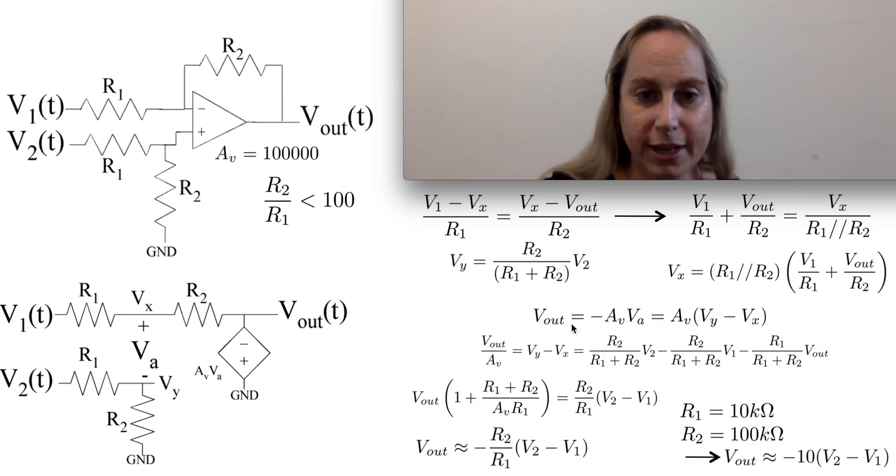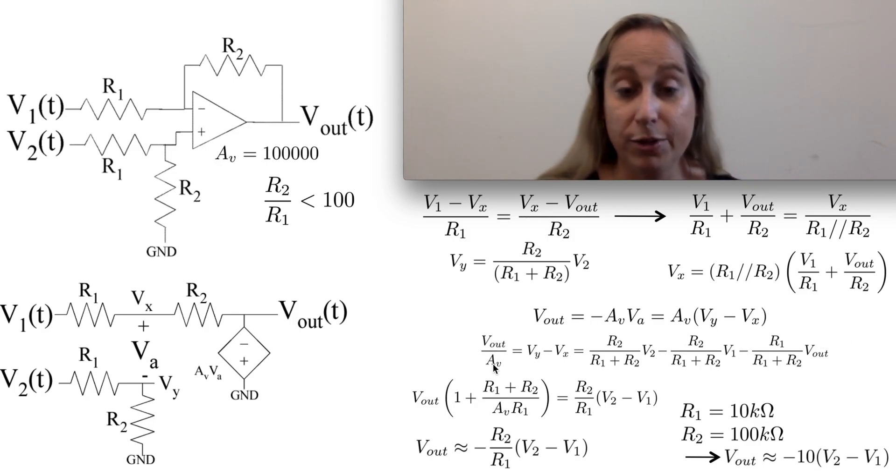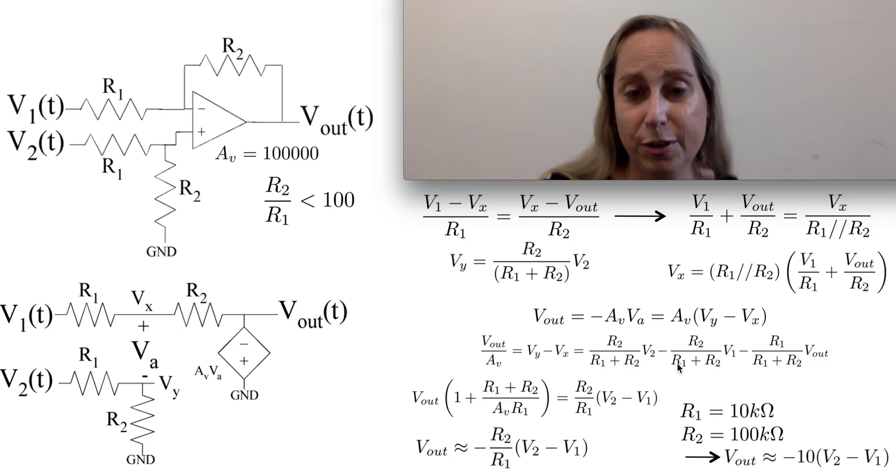And then I also, on the other side, have Vout over A sub V, which A sub V is huge. So I expect this is going to be the term that's going to be small. So I can then take R1 and R2 and multiply it through this term by that. And then when I'm done with that term,